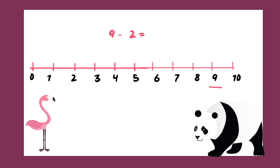So, let's hop 2 backward from 9. 1 and 2. So, what's our answer? We get the answer as 7. So, 9 subtract 2 is equal to 7. Well done!